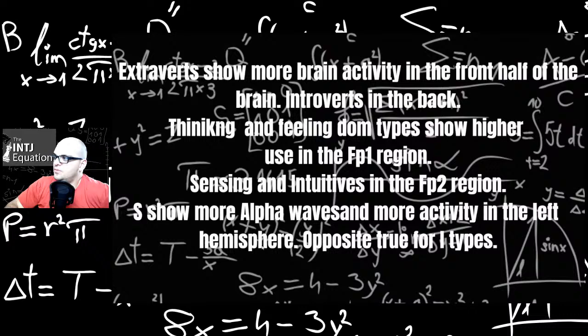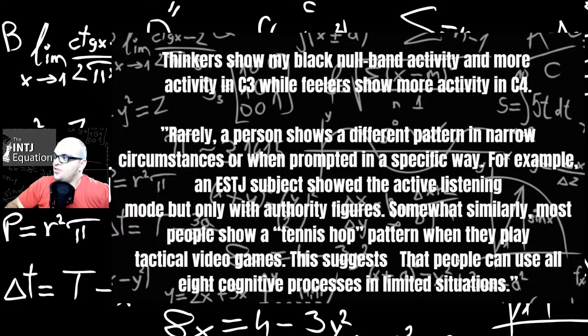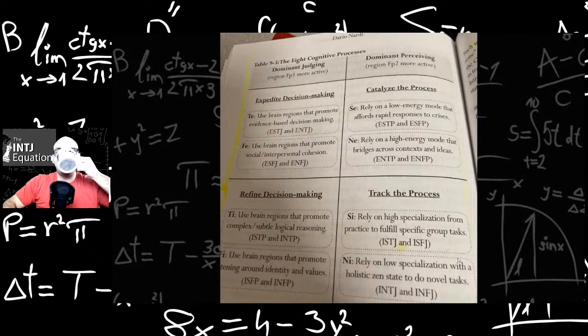Extroverts show more brain activity in the front half of the brain. Introverts in the back. Thinking and feeling doms show higher use in FP1 region. Sensing and intuitive use FP2 region. Sensors show more alpha waves and activity in the left side of the brain. Opposite is true for intuitive types. Thinkers show more black null band activity and more activity in C3. Feelers show more in C4. Rarely a person shows a different pattern in narrow circumstances. For example, most people show a tennis hop pattern when they play tactile video games. This suggests that people can use all eight cognitive processes in limited situations. Kind of silly to think that we only use four in my opinion.